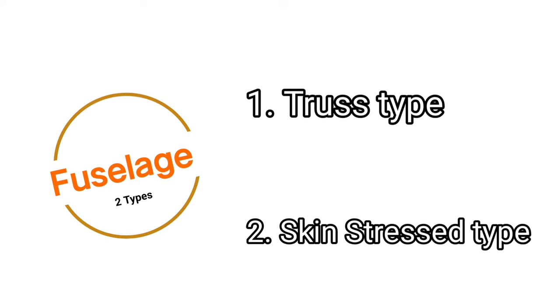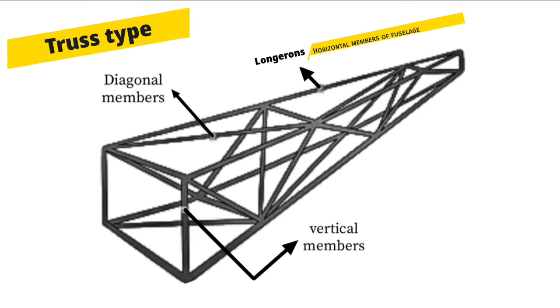There are two types of fuselage: truss type and skin stress type. Truss type is made up of beams, struts and bars to resist the loads.